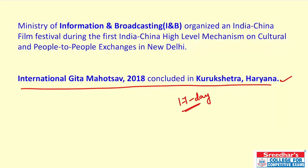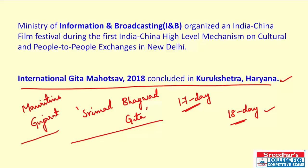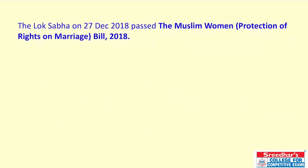The International Gita Mahotsav 2018 was concluded in Kurukshetra, Haryana — a 17-day international festival celebrated to commemorate the birth of Srimad Bhagavad Gita, marking the first day of the famous 18-day battle in the Mahabharata. This time Mauritius was the partner country and Gujarat was the partner state. The acting President of Mauritius announced that in February 2019, Mauritius will also organize an international Gita festival.